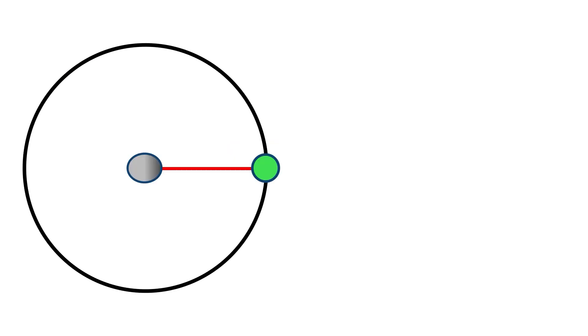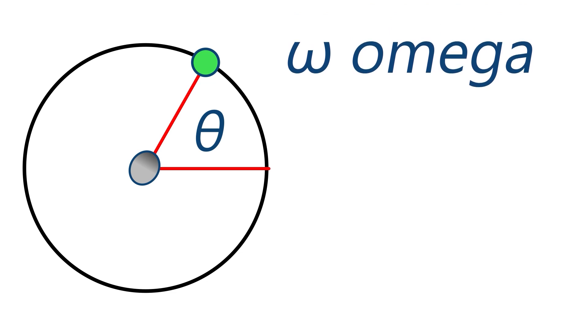We're now going to move on to angular velocity which is a measure of how many degrees or radians an object rotating turns through in a given time. This is given the symbol omega which as you can see is not the same as w.